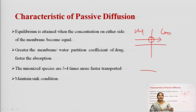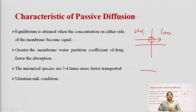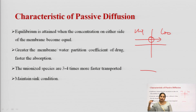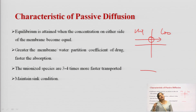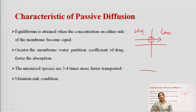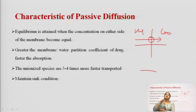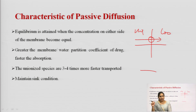Because drug entering the blood is continually swept away to other body parts, the concentration of drug in the blood will always remain less than in the GIT. Therefore, a concentration gradient or electrochemical gradient will always exist at the absorption site and the absorption process will continue. This condition is called the sink condition.